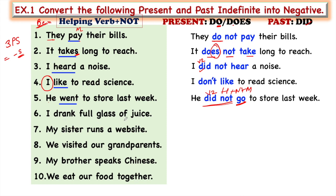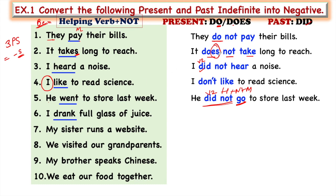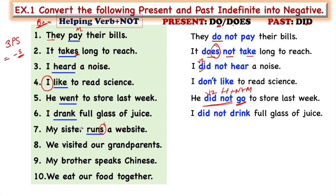'I drank a full glass of juice' — the main verb 'drank' is the second form of 'drink,' so this is past indefinite tense. We take the help of 'did': 'I did not drink a full glass of juice.' Next, 'My sister runs a website' — 'runs' ends with S, so it is present indefinite tense. My sister is third person singular, so we take the help of 'does.'